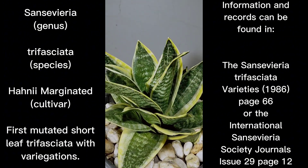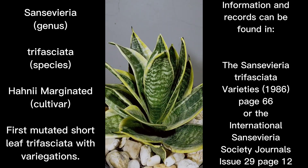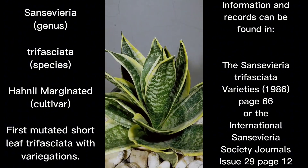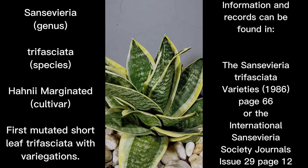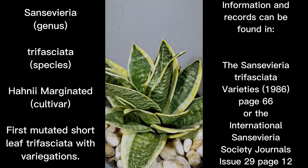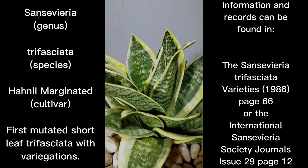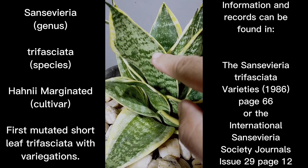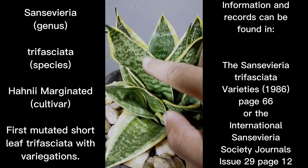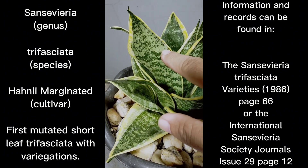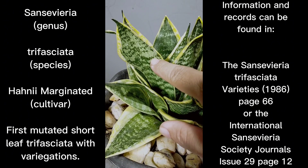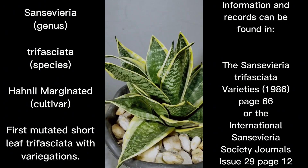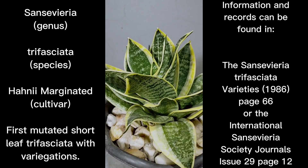This specific cultivar is a direct descendant of trifasciata Honey Eye, the green form of short leaf trifasciata. Honey Eye is the first cultivar that came out — it is a purely green, banded type of Sansevieria, with dark banding alternating with lighter green, silver, or pale green banding. That is the leaf pattern of this cultivar.